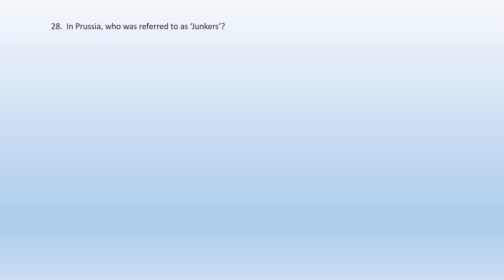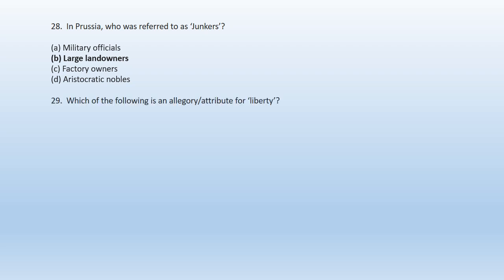Question 28: In Prussia, who was referred to as junkers? A. Military officials, B. Large landowners, C. Factory owners, D. Aristocratic nobles. B — large landowners are referred to as junkers in Prussia. Question 29: Which of the following is an allegory or attribute for liberty? A. Crown of Oak, B. Red cap, C. Olive branch, D. Soul. Red cap — option B — is the right answer. Red cap is an allegory for liberty.